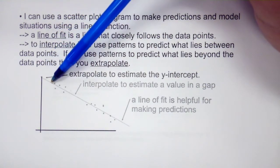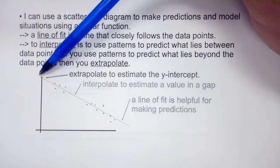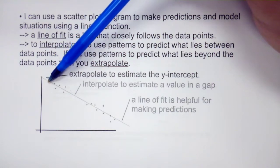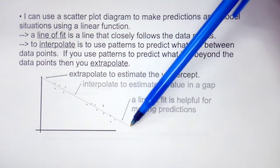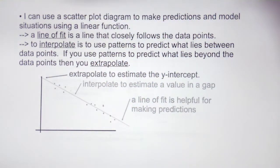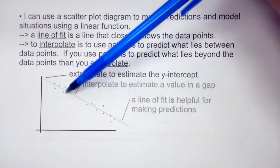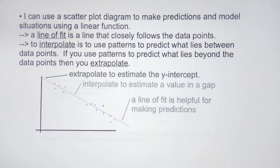So these are extrapolates. We're predicting outside of our normal range of our data. So interpolate generally is our gap within the range, and then extrapolate would be a gap outside of the range.